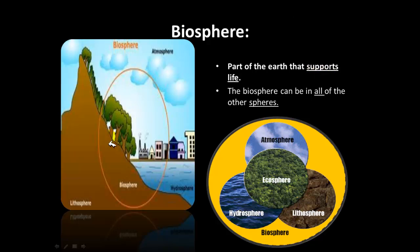And this is another graphic that shows how all of the other spheres can be included in the biosphere. Here we see that this part of the atmosphere, if this circle represents the biosphere, we can see that some of the atmosphere is included in this circle, some of the hydrosphere or the water, and some of the land, the lithosphere, are all included in the biosphere. And what that means is that this part of the atmosphere, this part of the land, and this part of the water can support life.